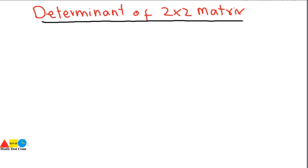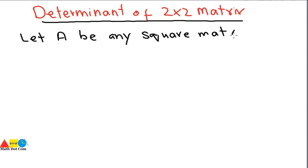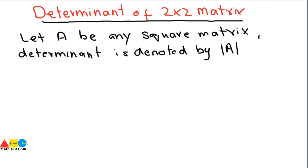Hello everyone, we are going to discuss a very important topic of matrices — the determinant of matrices. We will discuss the determinant of a 2×2 matrix. Let A be any square matrix. Keep one thing in mind: the determinant is possible only for a square matrix, that is, a matrix having the number of rows equal to the number of columns.